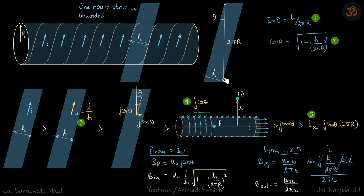When you unwind it, the height will be 2πr and the width of this strip is h. If we take this angle θ on which this strip is aligned with the vertical, then sin θ is h/(2πr) and cos θ is √(1 - sin²θ).